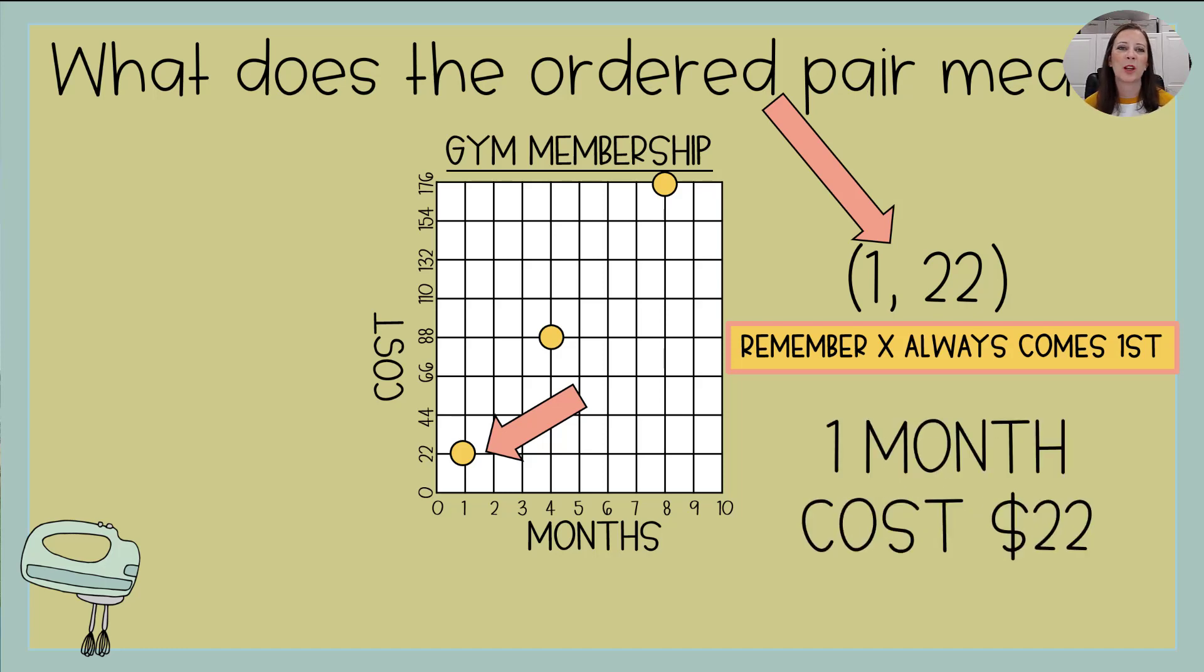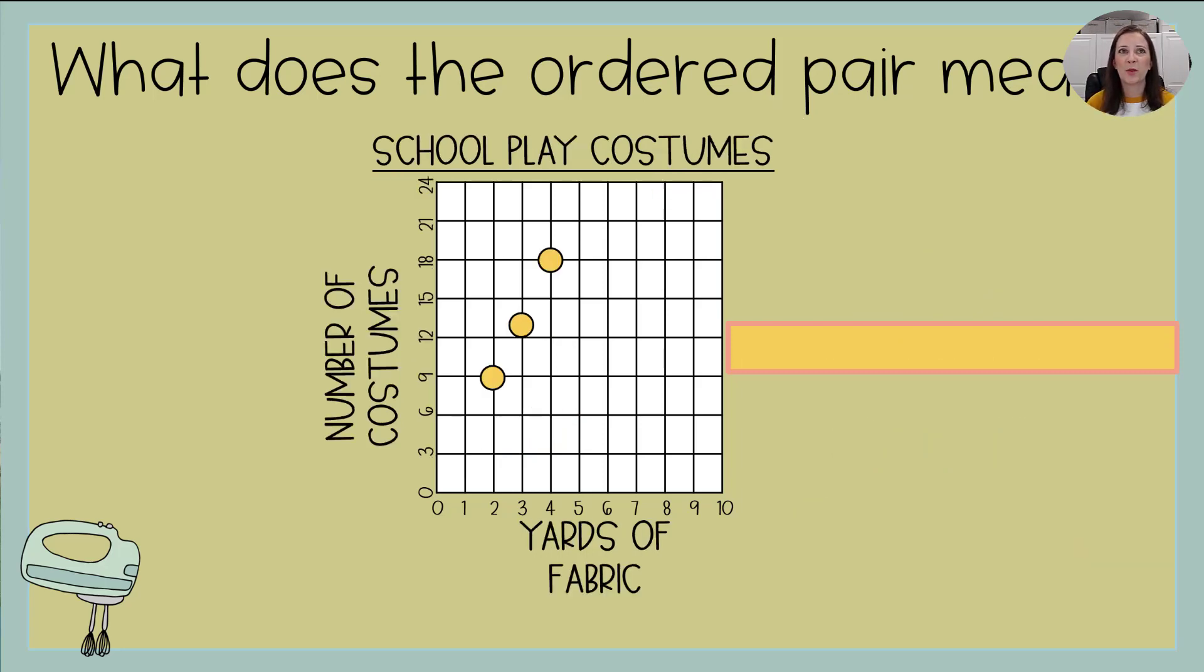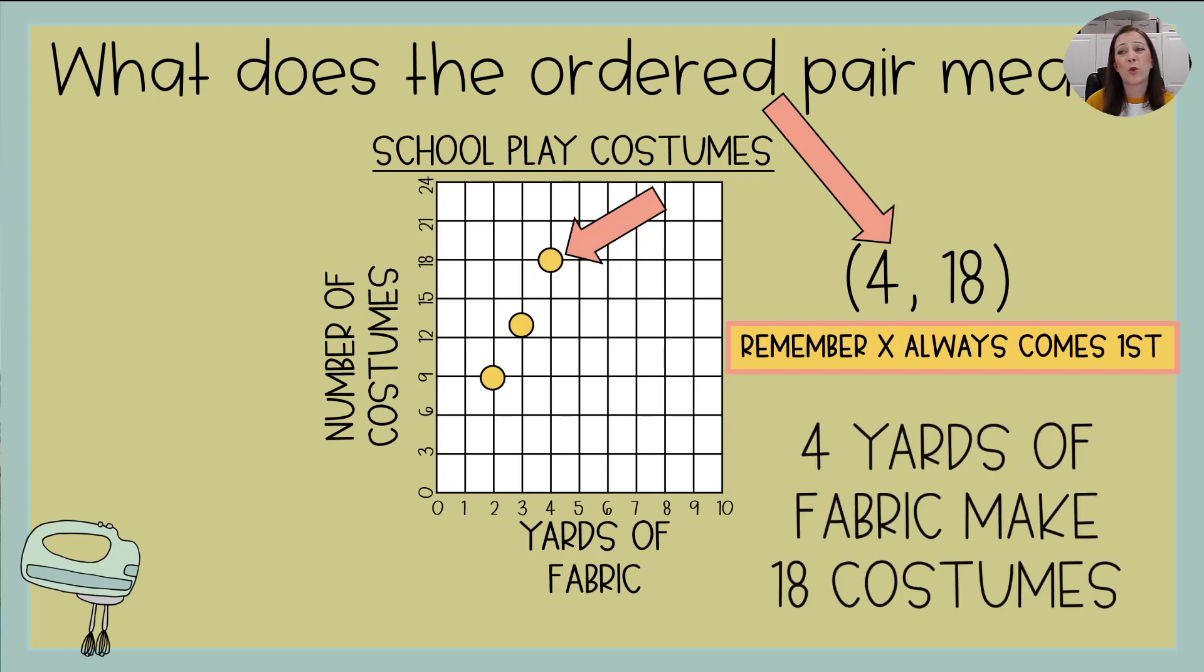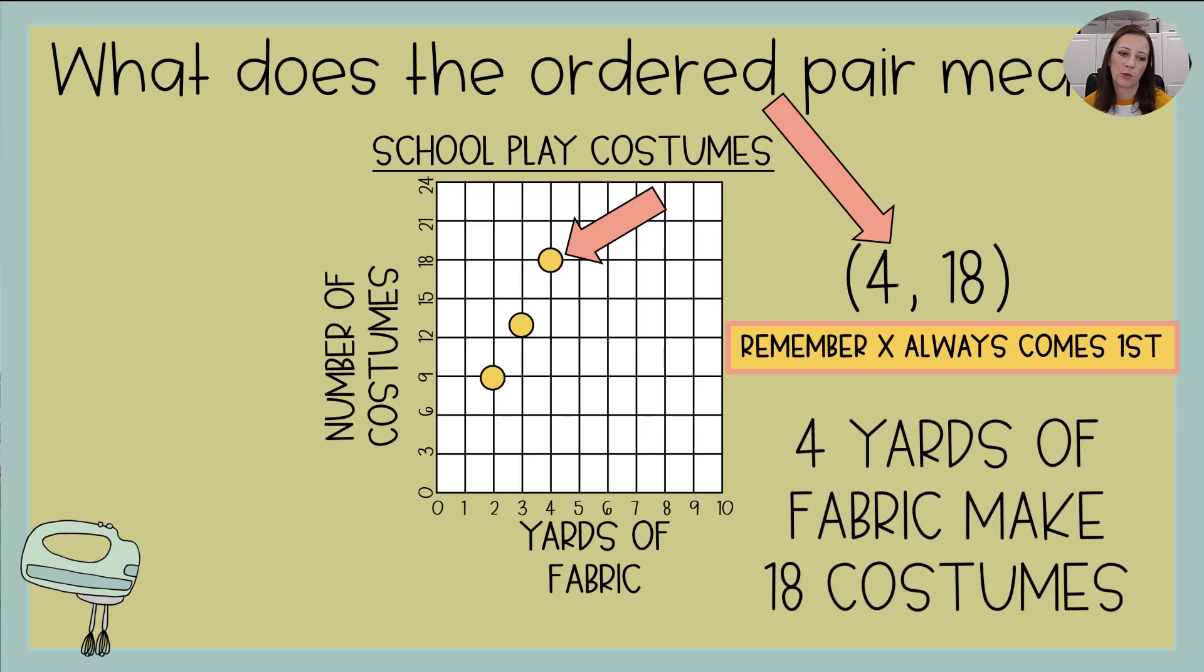It tells us that one month costs $22. So you've got to be able to look at the graph and figure out what information you can get from it. Let's try another one. We've got school play costumes. We've got yards of fabric on the x-axis. And we've got the number of costumes on the y-axis. Here is the point we're looking at. That ordered pair is 4, 18. We're remembering that x comes first. And so what does that tell us? Yeah, that means it takes 4 yards of fabric to make 18 costumes.